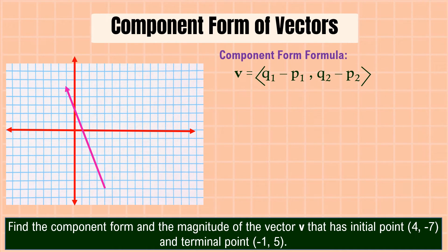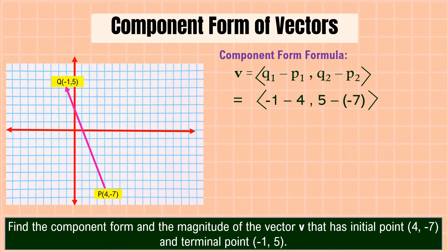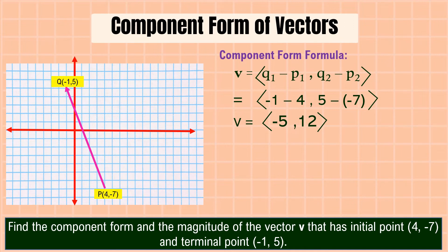For example, find the component form and magnitude of vector v with initial point (4, −7) and terminal point (−1, 5). To find the component form, we substitute the points into our formula: q₁ − p₁ = −1 − 4, and q₂ − p₂ = 5 − (−7). Solving: −1 − 4 = −5, and 5 − (−7) = +12. So the component form is (−5, 12), and the initial point is now at the origin (0, 0).